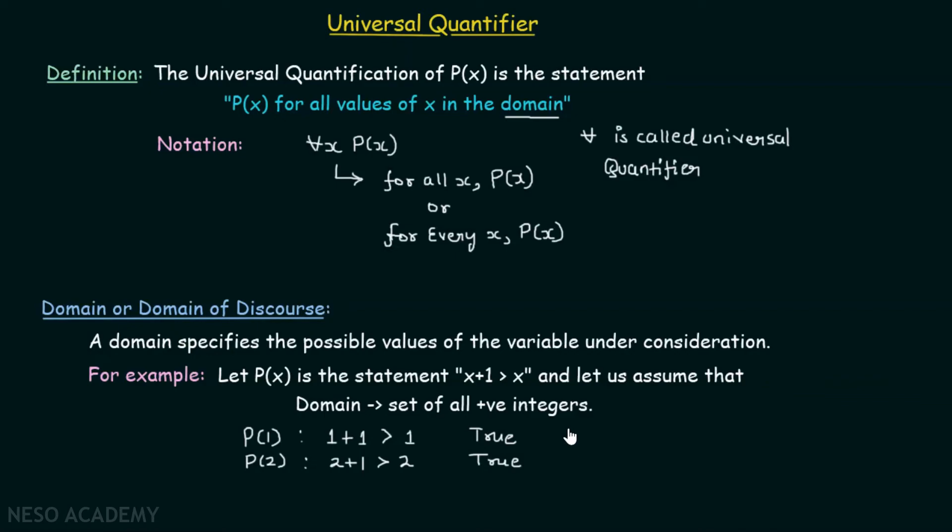So when the domain is given to you, then it means that you should consider only that domain. You can't consider anything apart from that. This is basically the domain of discourse, the possible values you can take for x.